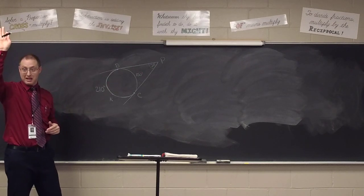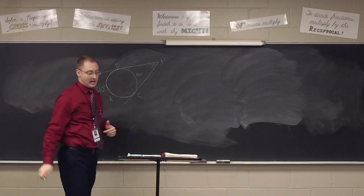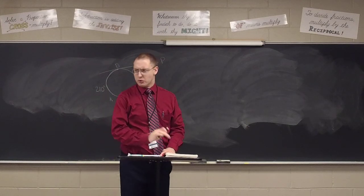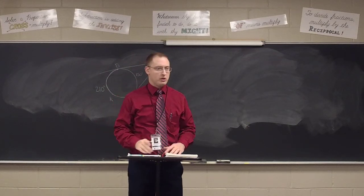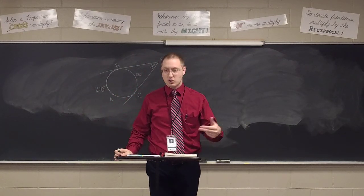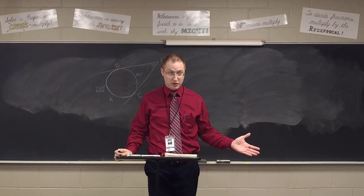360 minus 223 gives 137, so the two arcs are 223 and 137. The difference is 86, half that difference is 43 degrees for angle P. How many had the same answer? Excellent. Any questions on those circles involving angles formed by tangents, secants, or secant-tangent?